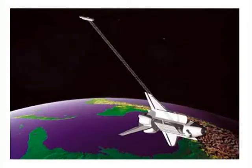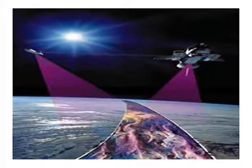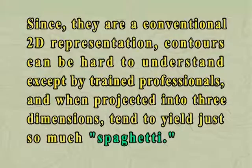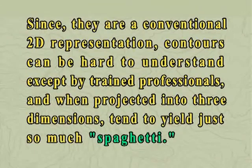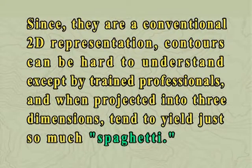Topographical maps with lesser contour intervals can be obtained through photogrammetric surveys. Shuttle Radar Topographic Mission and Advanced Spaceborne Thermal Emission Radiometer are spaceborne sensors that provide contour maps with 90 metre and 30 metre contour intervals for the entire world. Since they are a conventional 2D representation, contours can be hard to understand except by trained professionals, and when projected into three dimensions, tend to yield just so much spaghetti.